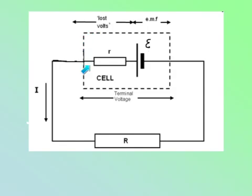This is how we should draw a real cell, which consists of an ideal cell with EMF E in series with a small resistor indicating internal resistance. So we have EMF across the ideal cell, and then the lost volts across the internal resistance. And across the two terminals of the cell is the terminal voltage, which is available for use by the external resistor.